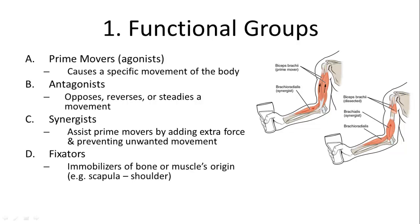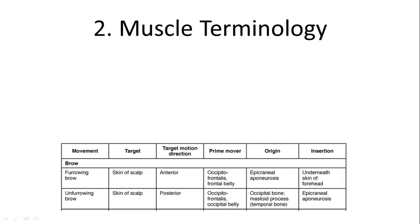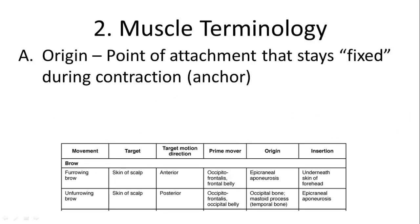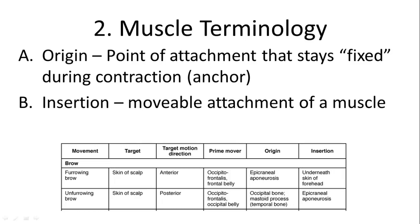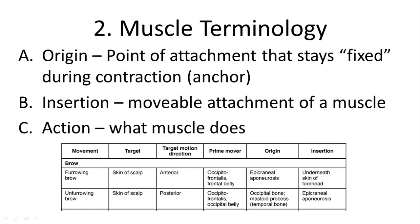And then you have fixators which immobilize a bone or a muscle's origin. There are a number of fixators on the scapula which help keep the shoulder in place as you use your arm. Now each muscle has three main features: an origin, which is where it attaches and stays fixed during contraction — that's the anchor part. An insertion, which is the part that moves. So the biceps attaches at the top of the humerus, and its insertion would be on the forearm. And then the action — what it does. It flexes the forearm, so it would be a flexor.